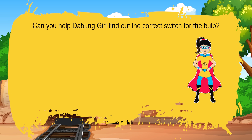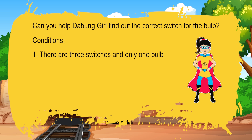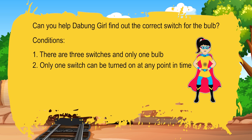'Let me think. Can you help the Bung Girl find out the correct switch for the bulb?' Conditions: one — there are three switches and only one bulb; two — only one switch can be turned on at any point in time; three — we can go down the tunnel only once.